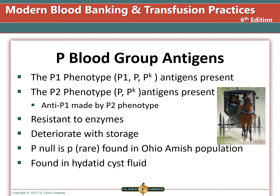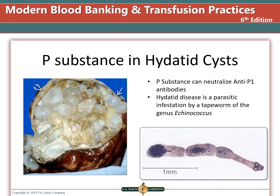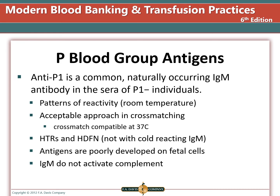Anti-P1 can be made by people with the P2 phenotype. This antigen is resistant to enzymes, deteriorates with storage, and the P null or little p phenotype is found in the Ohio Amish population. If someone has anti-P1, hydatid cyst fluid can be used to neutralize the antibody, allowing detection of other antibodies that may be present. The P substance found in hydatid cyst fluid neutralizes anti-P1. Hydatid disease is a parasitic infection by a tapeworm of the genus Echinococcus, which is not endemic to the United States.